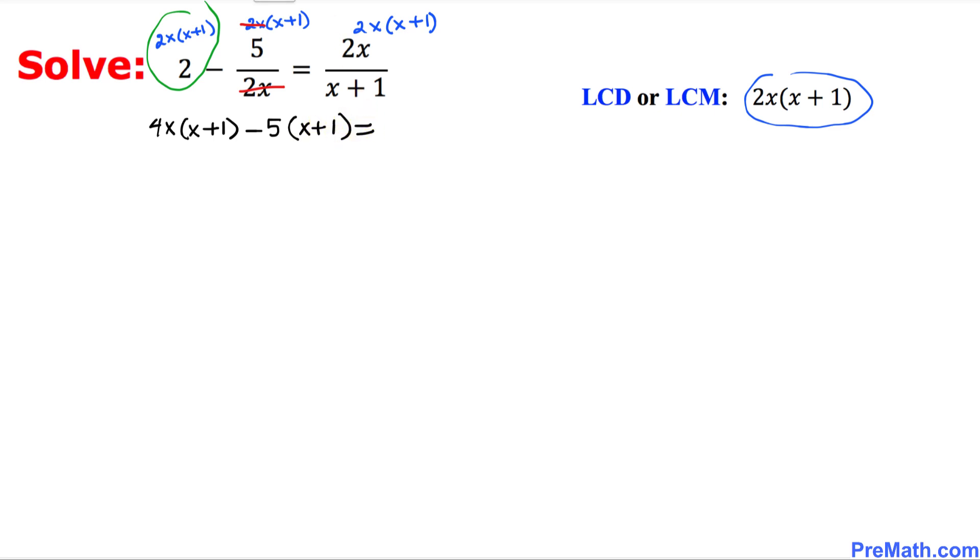On the right side, we multiply 2x times 2x, which is going to make 4x squared.